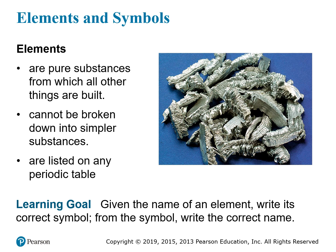We learned previously that elements are pure substances. They're a type of pure substance from which all other things are built, and so they cannot be broken down any further in some sense. The elements are listed on any periodic table, so you have things like hydrogen, helium, oxygen, carbon, iron.